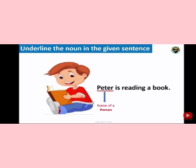Now you have an exercise — underline the noun in the given sentences. First sentence: 'Peter is reading a book.' There are two nouns to underline. Very good — first noun is Peter, which is a person. The second noun is book, which is a thing.